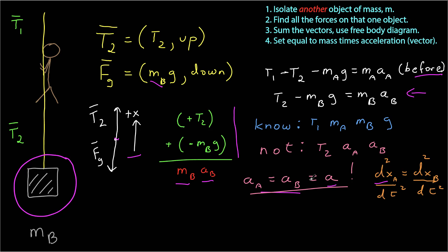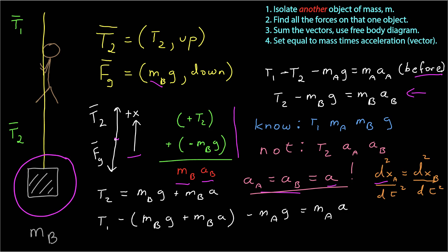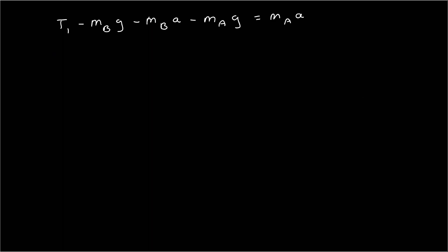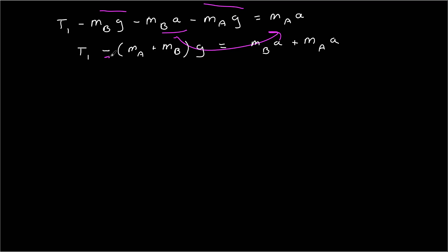Now we have three equations and three unknowns and can solve. I solve the box equation for T2 and substitute it into the first equation. Distributing the negative sign and collecting terms, I move the gravity terms to one side and factor out g, then factor out a from the acceleration terms. Dividing both sides by m sub a plus m sub b gives the acceleration: a equals (T1 minus (m sub a plus m sub b) times g) divided by (m sub a plus m sub b).